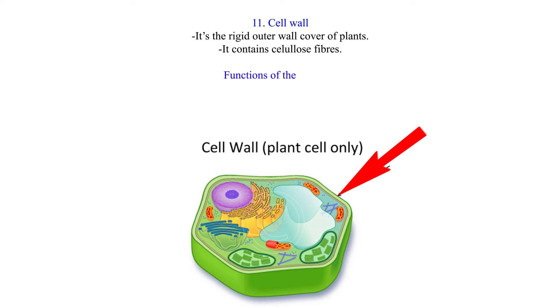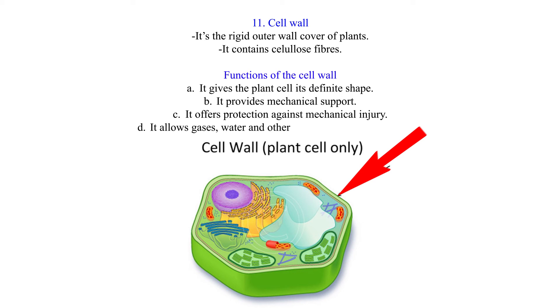Functions of the cell wall: A. It gives the plant cell its definite shape. B. It provides mechanical support. C. It offers protection against mechanical injury. D. It allows gases, water, and other substances to pass through it.